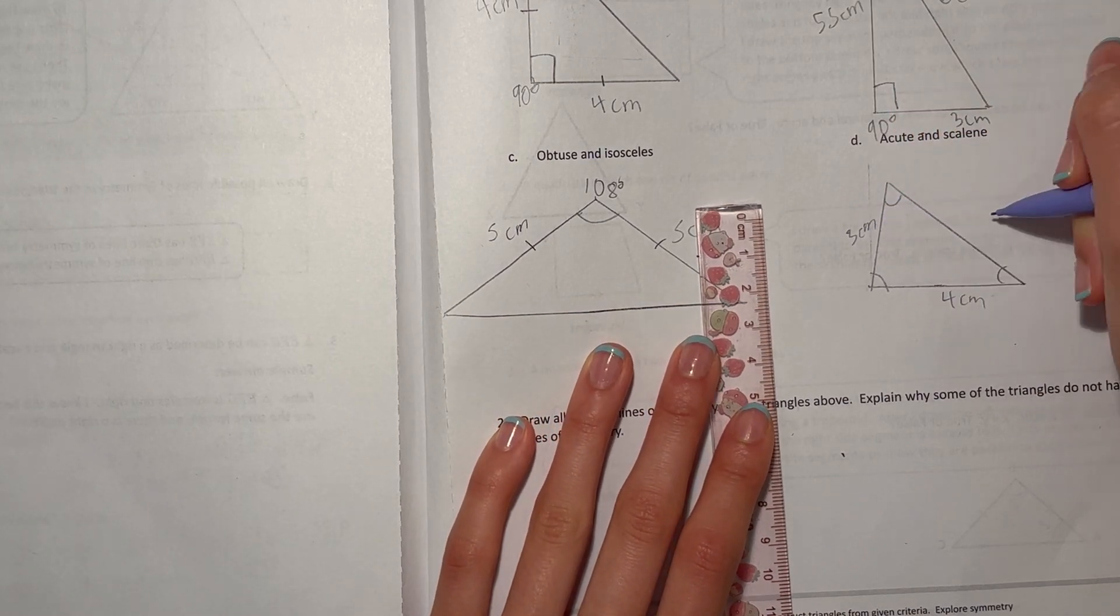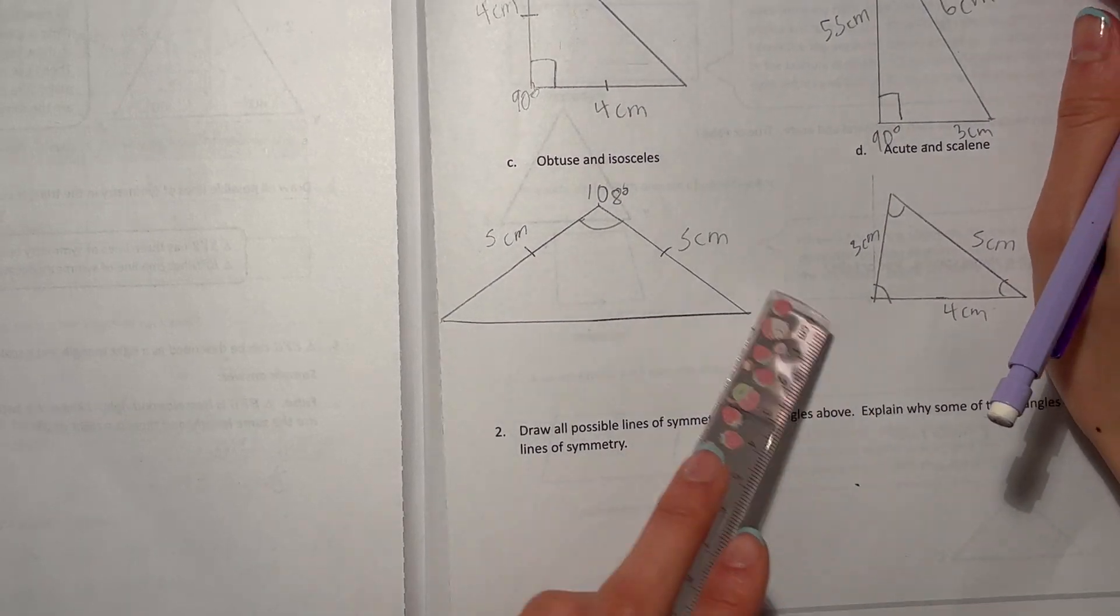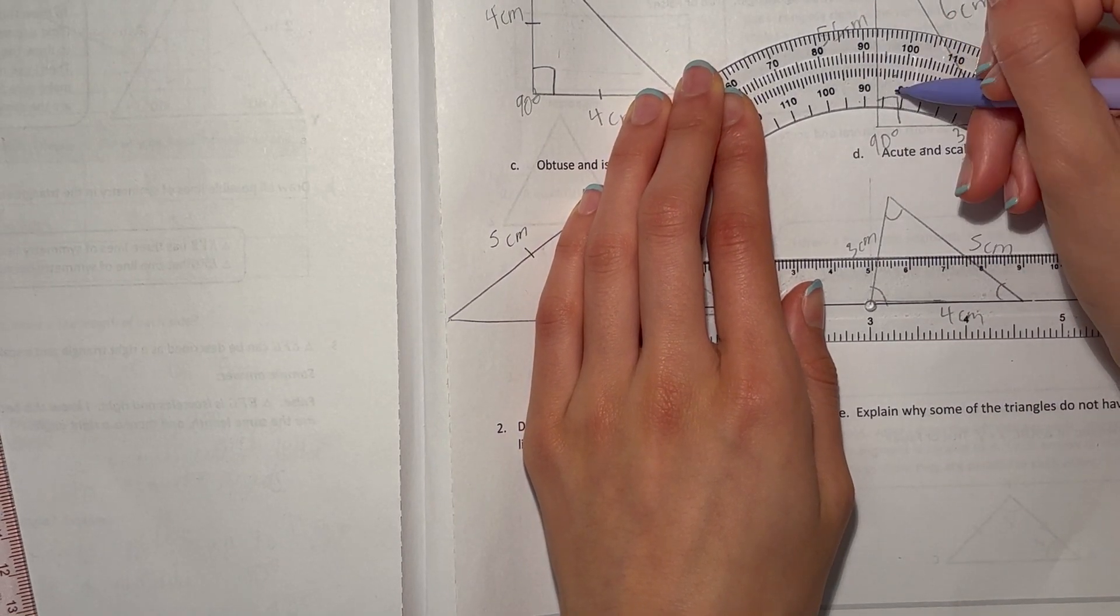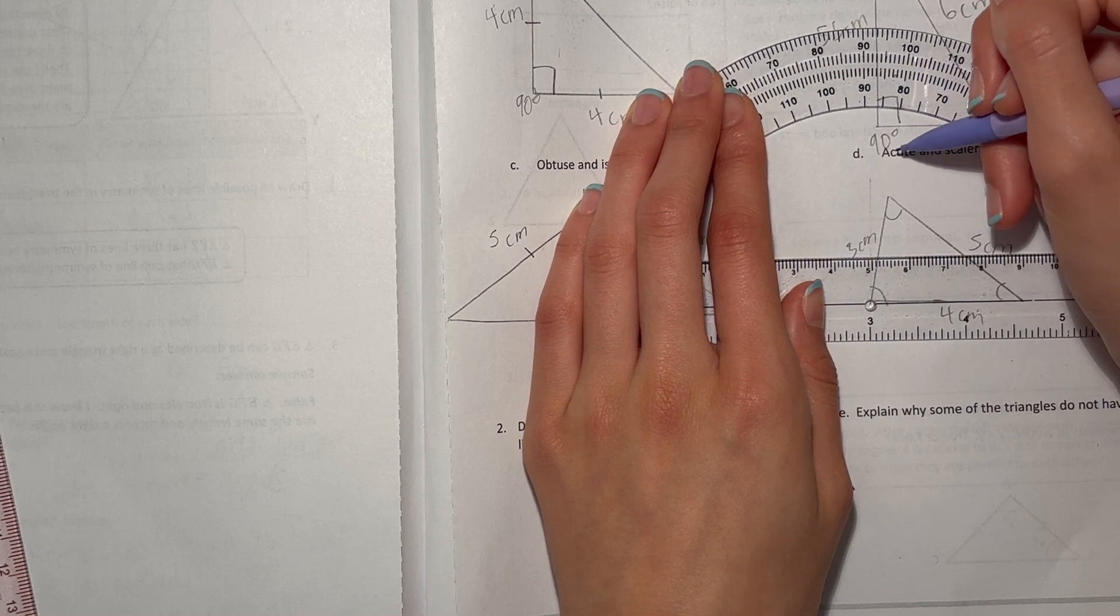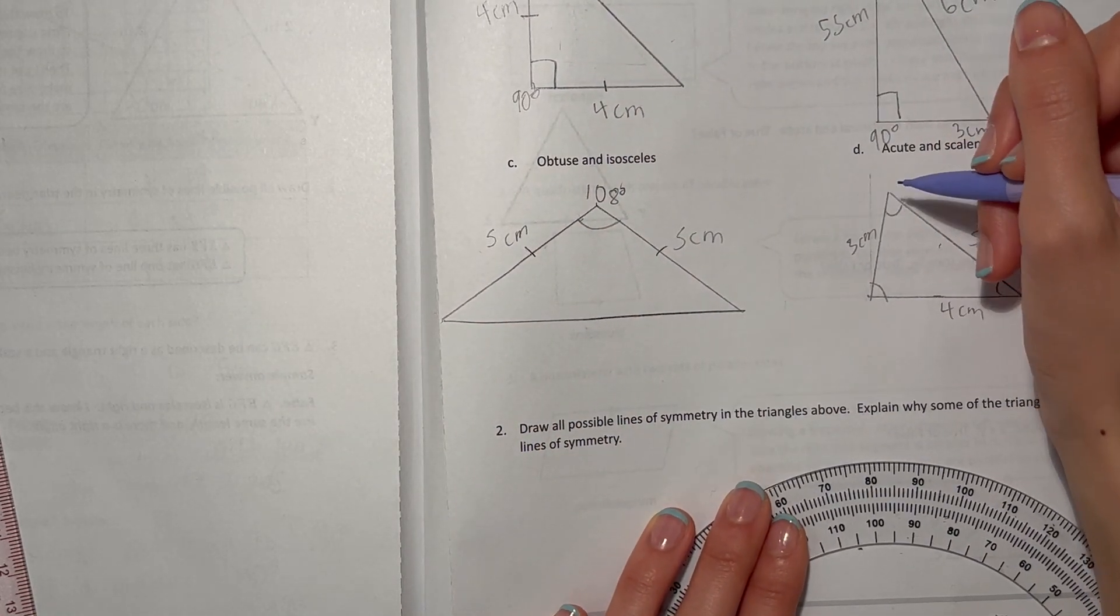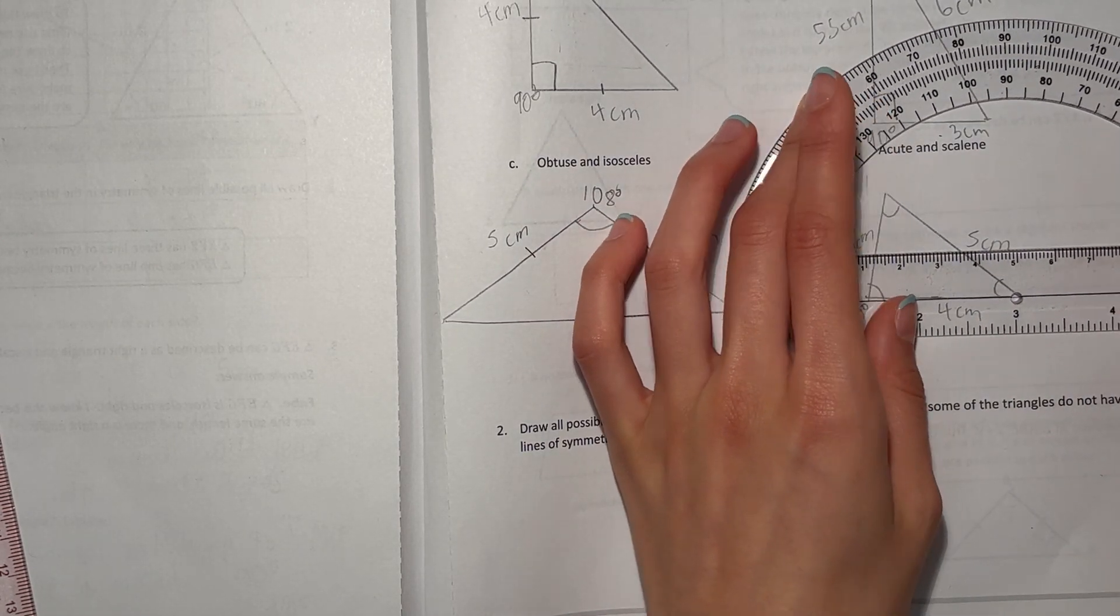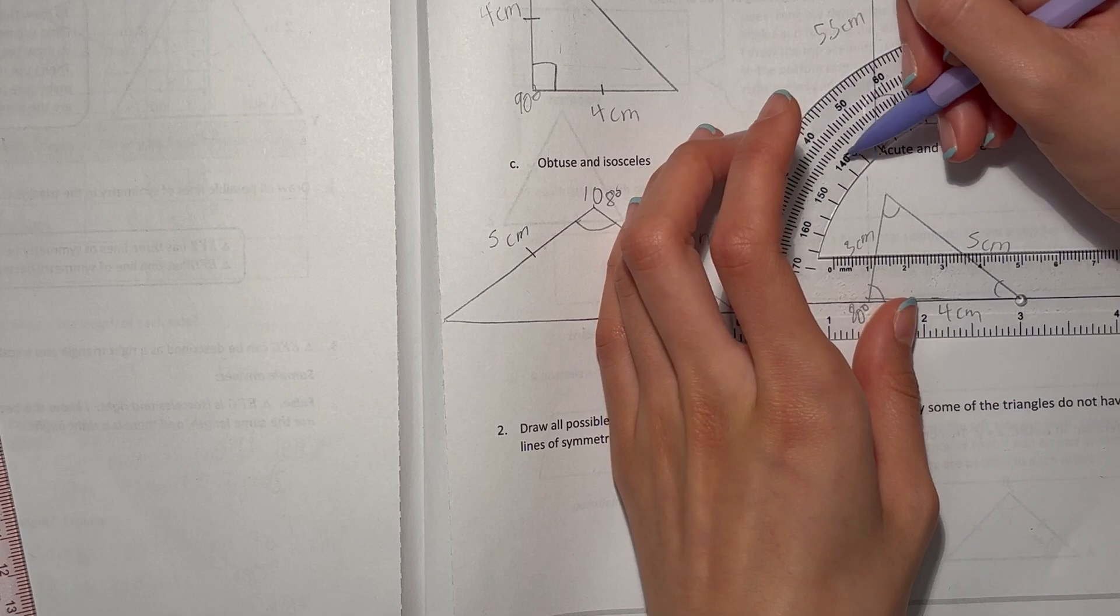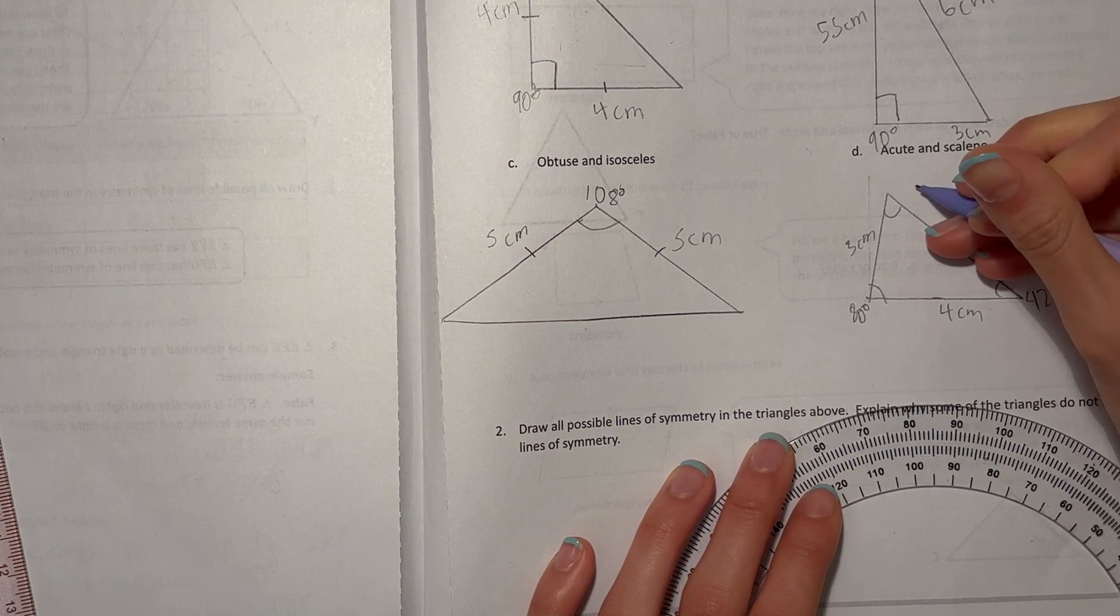All right, so is this four centimeters, three centimeters, making this five centimeters, and our angle measurements. All right, let's start with this one. This one, let's do it, 80. We'll just say it's about 80 degrees. Okay, this one's 80 degrees.